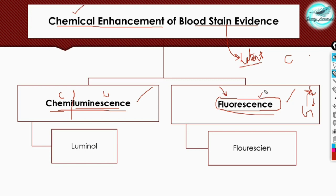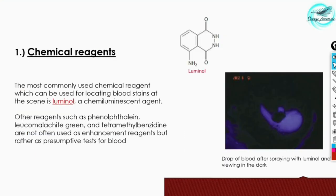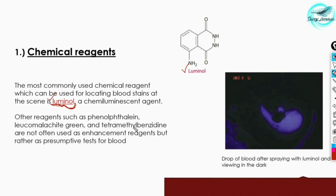The chemiluminescent reagent used is luminol, while in fluorescence the fluorescein reagent is used. The most commonly used chemical reagent for locating blood stains at the scene of crime is luminol. Its chemical name is 3-aminophthalhydrazide — this is important because exam questions often give you the chemical name and ask you to identify it.